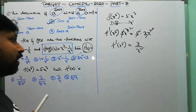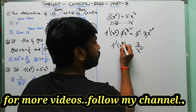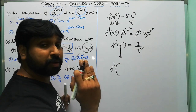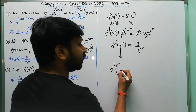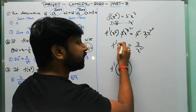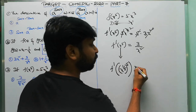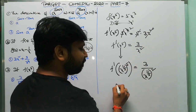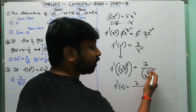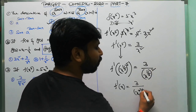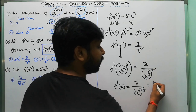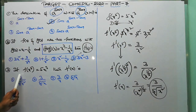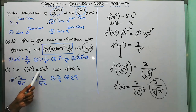We have f'(x^5) = 3/x². To find f'(x), substitute x^(1/5) in place of x so that x^(1/5)^5 = x. Then f'(x) = 3/(x^(1/5))² = 3/x^(2/5) = 3/(5th root of x²). The first option is the correct answer.